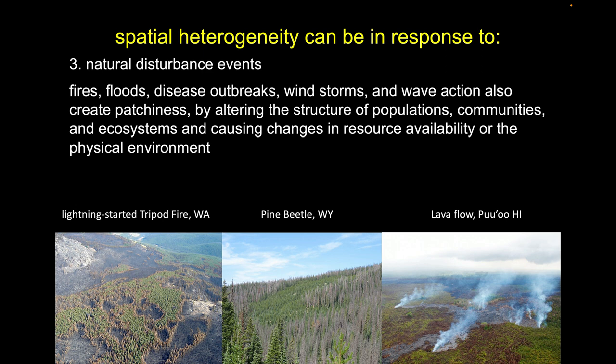On the right, we have lava in Hawaii — a classic disturbance where lava comes in and burns up essentially all macroscopic life. When the lava cools, we have this patch of de novo rock that has nothing macroscopic living on it. A clear example of heterogeneity induced from natural disturbances.